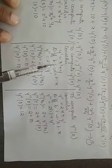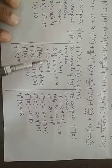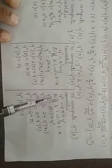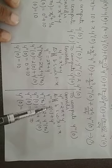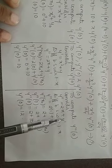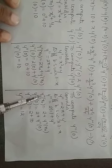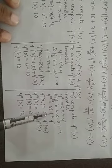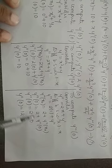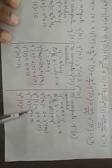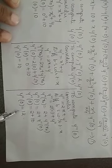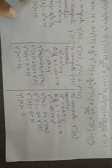To compute y'''(0): differentiate the simplified expression for y''. The derivative of y'' is y''', and differentiating 2x + y' gives 2 + y''. So y'''(x₀) = 2 + y''(x₀), i.e., y'''(0) = 2 + y''(0) = 2 + 10 = 12.